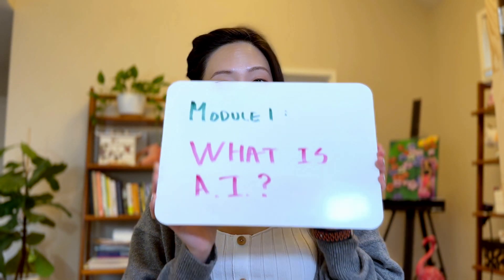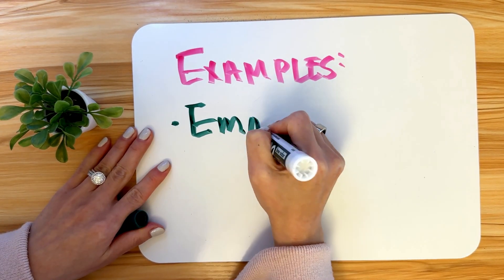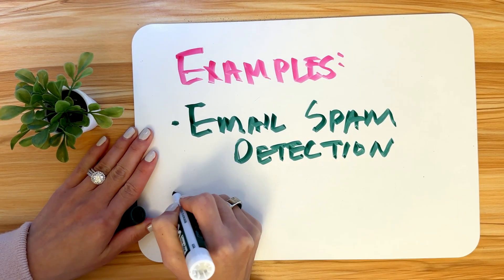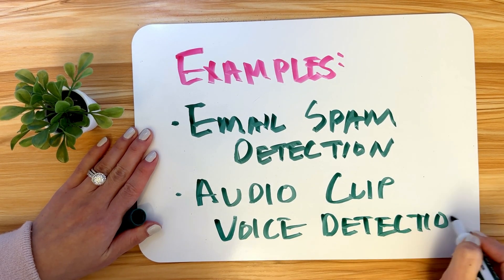Starting with module one: what is AI? At its core, AI is about teaching computers to make decisions based on patterns in data. For example, you can detect if an email is spam or not, or identify what is being said in an audio clip. AI is used to power all kinds of things like spam filters, speech recognition, or even tools like ChatGPT. But the key to everything is that AI needs data, and a lot of it.